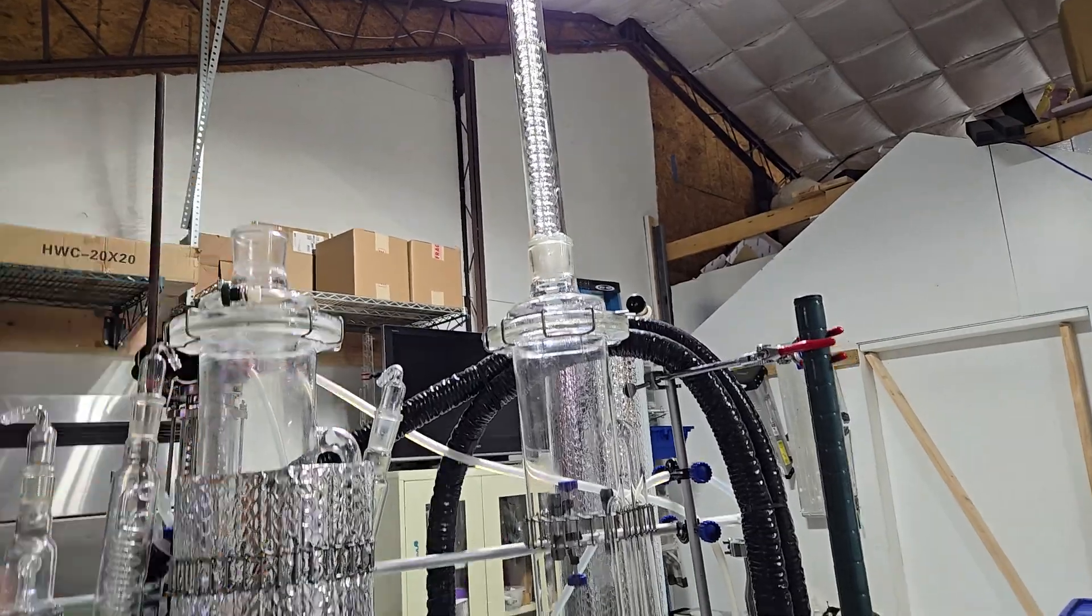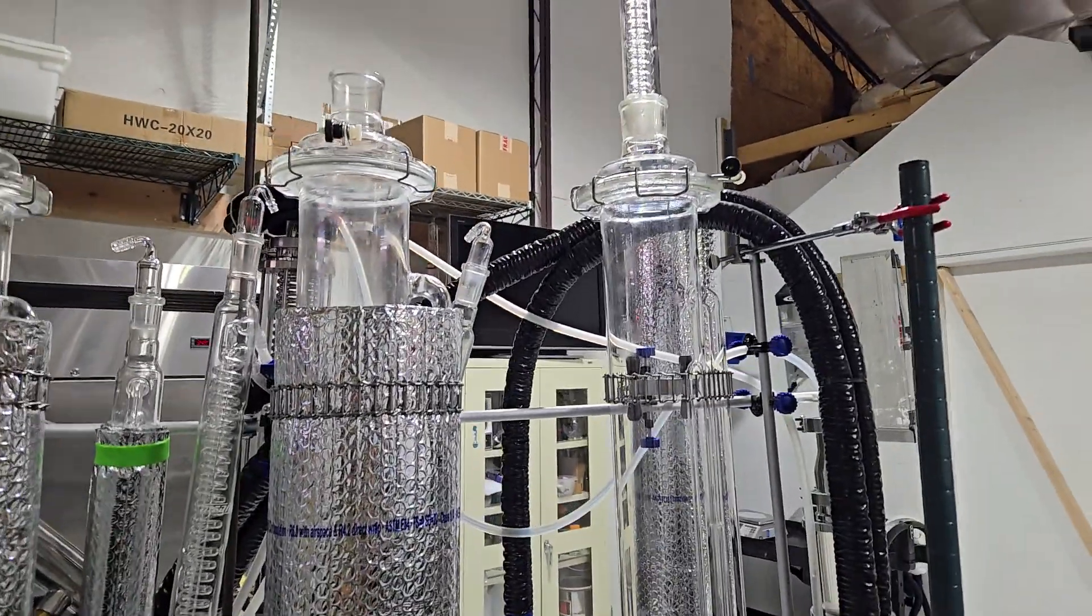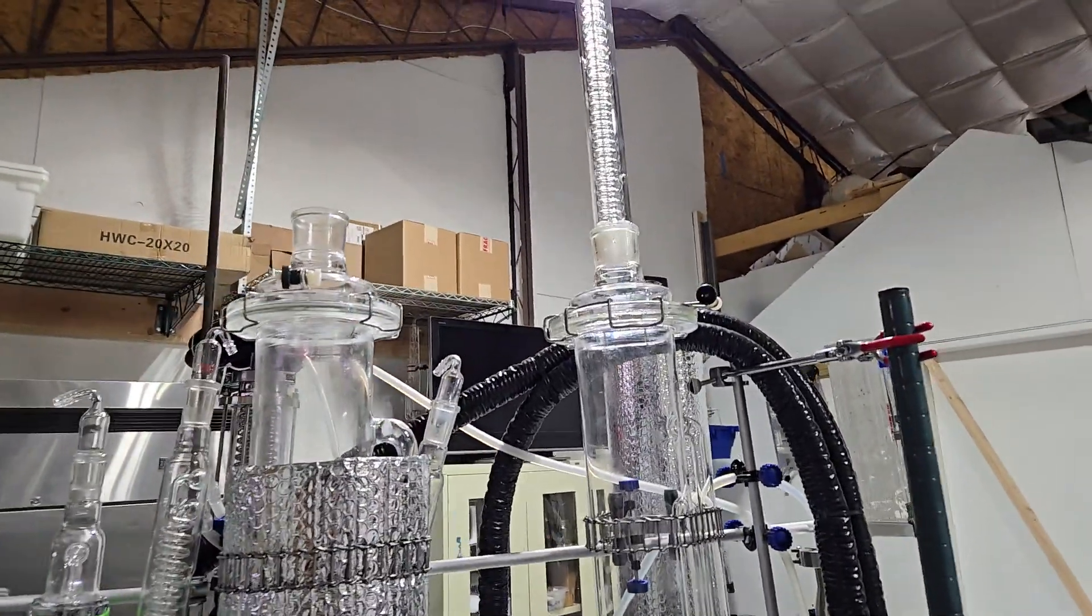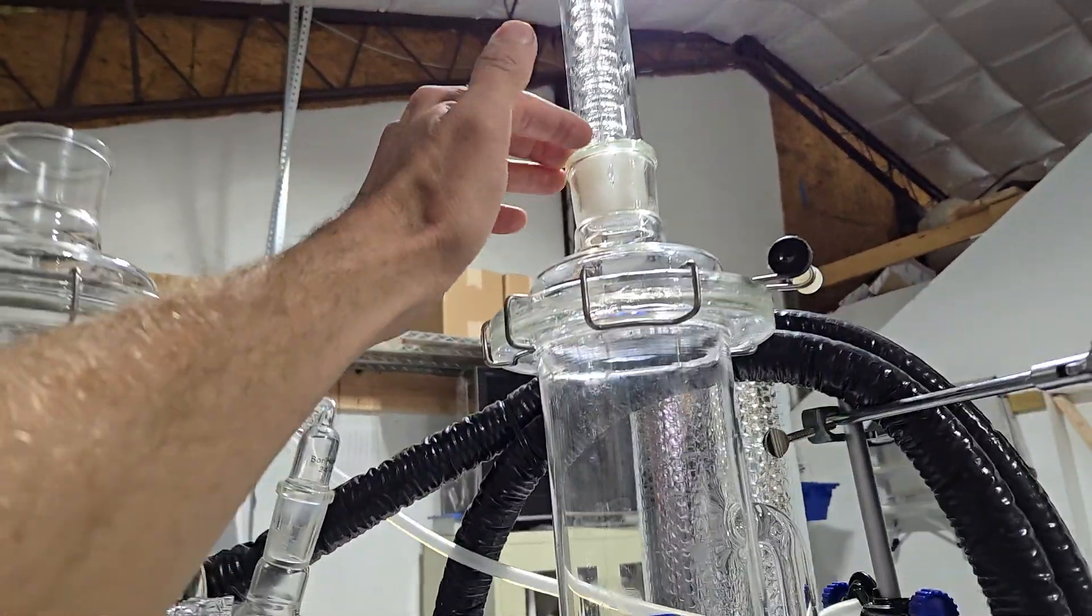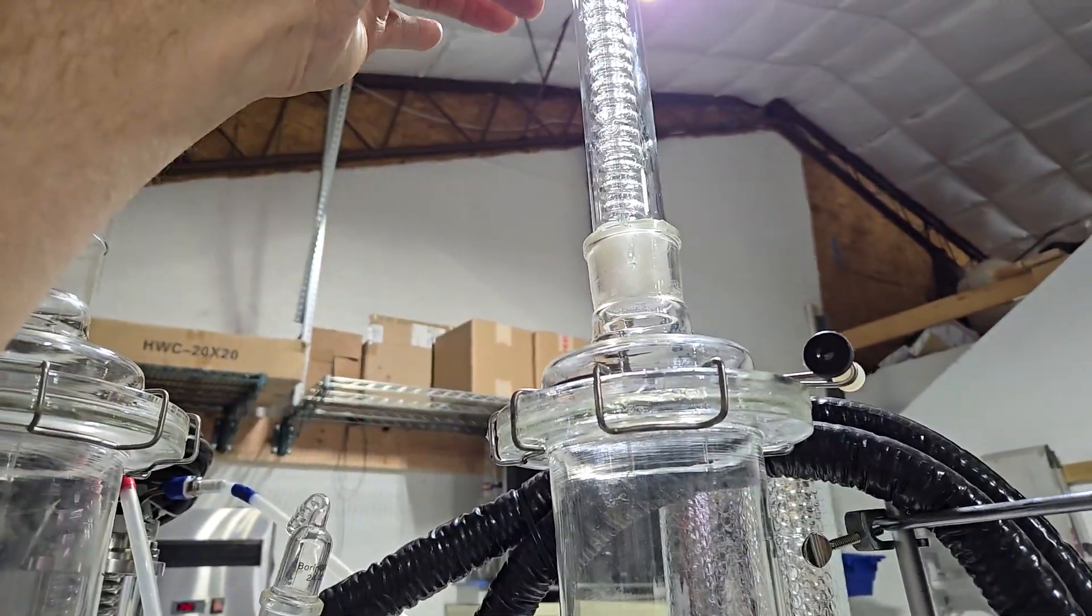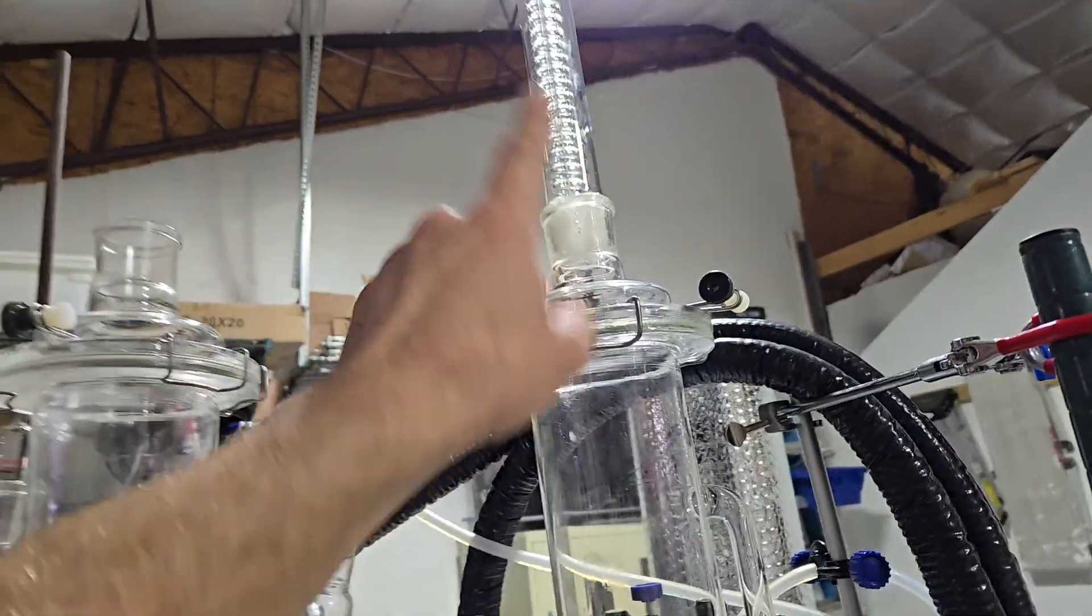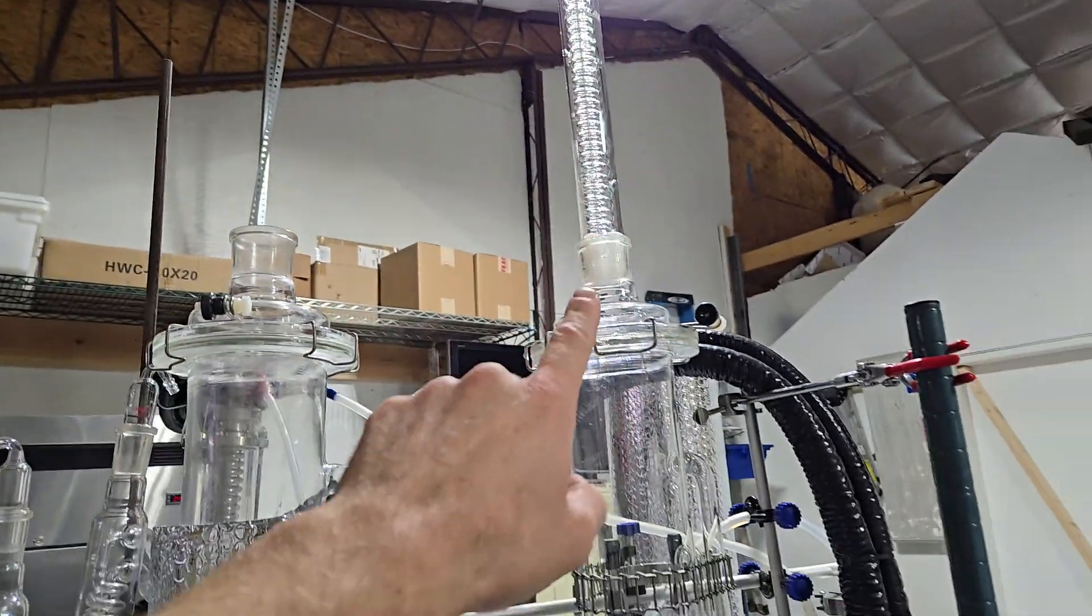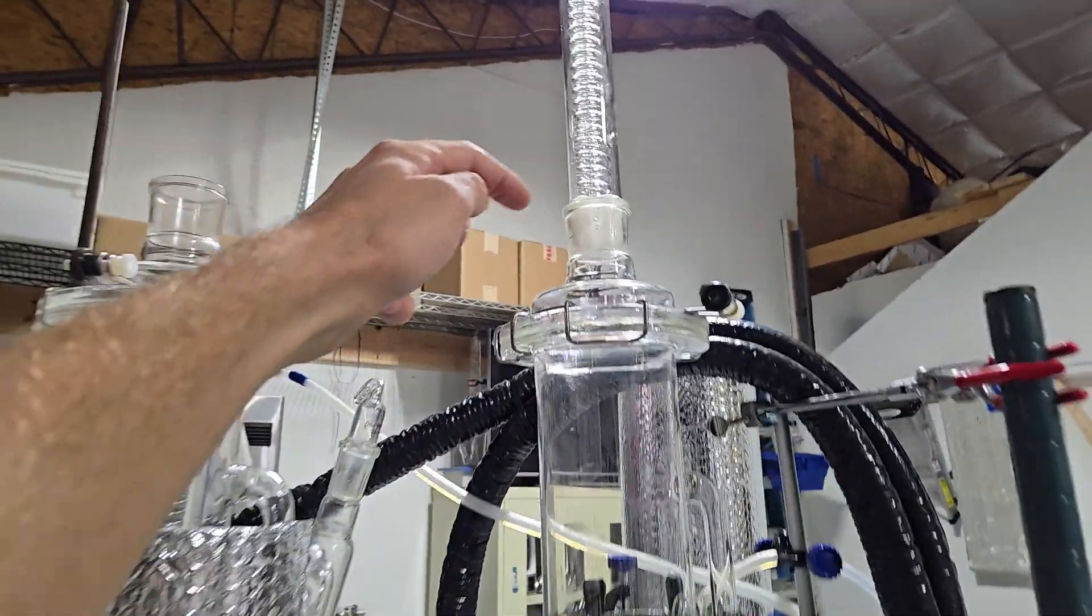Also the flow ability of both vapors up and liquid down is really good on this. It tends to corkscrew down the condenser coil and then it just drips really freely off the end.